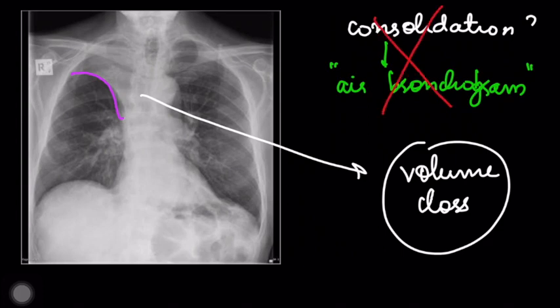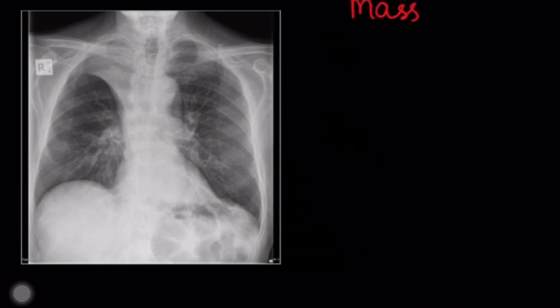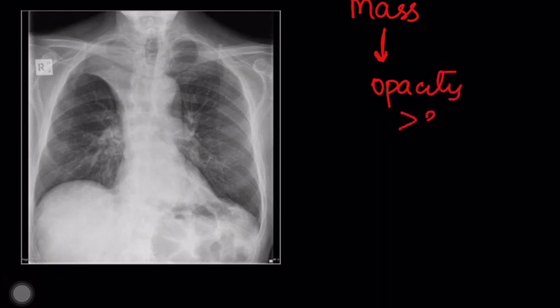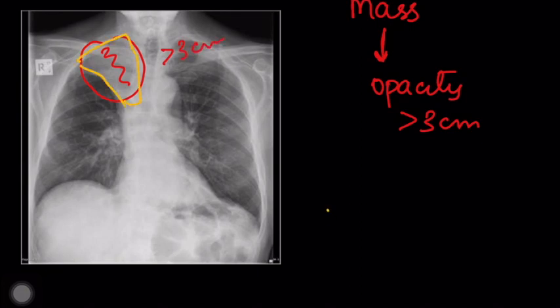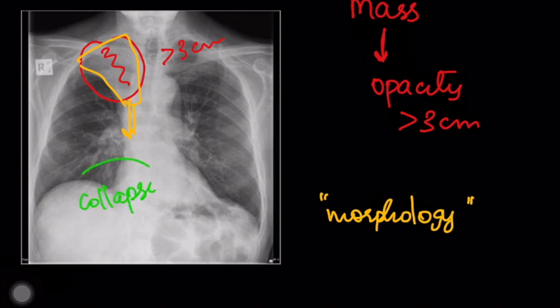Now going to the second modality — let's take mass first. By definition, mass means opacity more than three centimeters. Does this really fit into a mass? It's difficult to say that, because yes, there is an opacity and maybe it's more than three centimeters, but because of this typical shape or morphology, it is unlikely to stamp it just as a mass because it fits into something better.